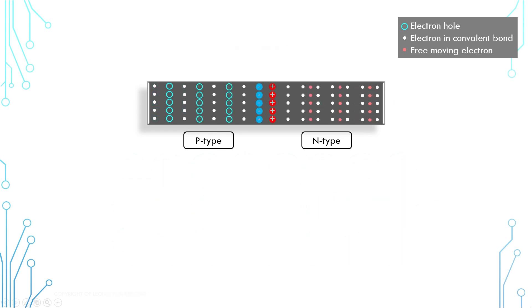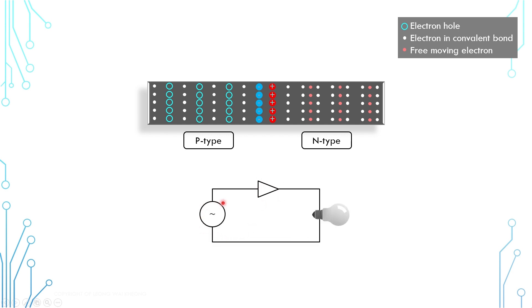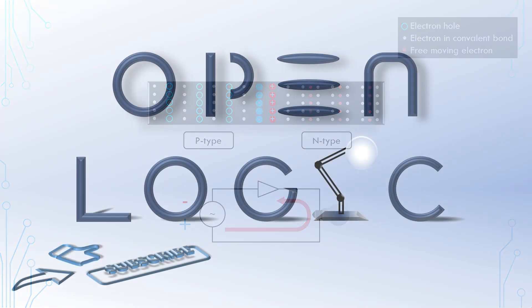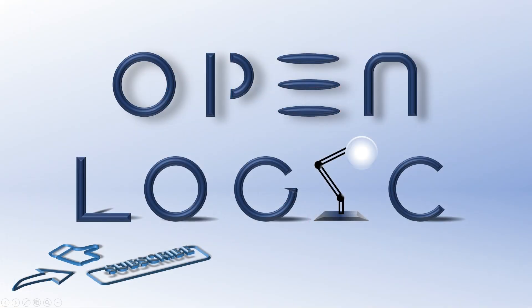Now, in summary, a PN junction serves as a basic control for electric current flow. It allows current to flow through in forward bias mode, and it blocks current in reversed bias. Alright, that's it for this time around. Thanks for watching. I hope the video has been helpful. Please support by clicking like, share, and subscribe.